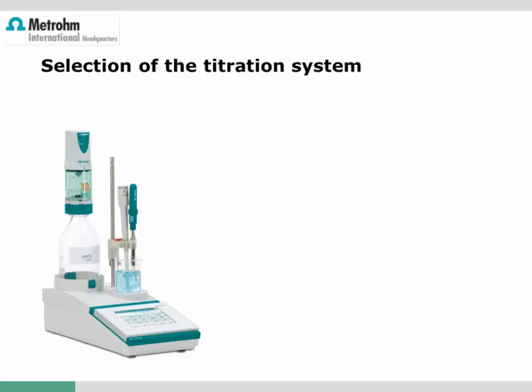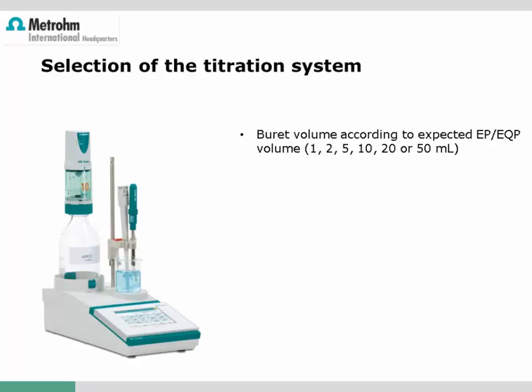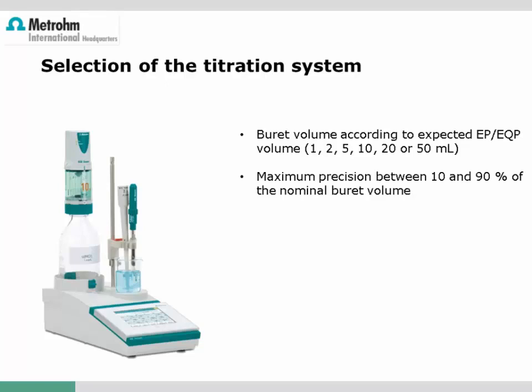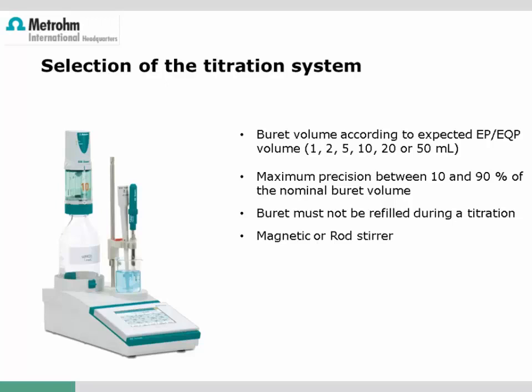Once the indication method is decided, all other required equipment must be selected. Depending on the expected volume at the end or equivalence point, the burette volume should be chosen. As a rule of thumb, the end or equivalence point should be within 10 to 90% of the nominal burette volume to achieve maximum precision, and the burette should be large enough to avoid refilling during titration. Stirring is crucial — usually either a magnetic or rod stirrer is used. Magnetic stirrers offer more flexibility; rod stirrers are used when strong stirring is required or when magnetic stirring bars must be avoided.